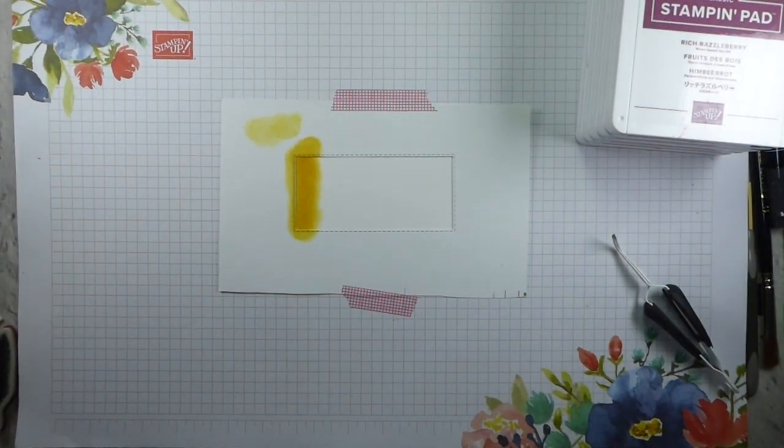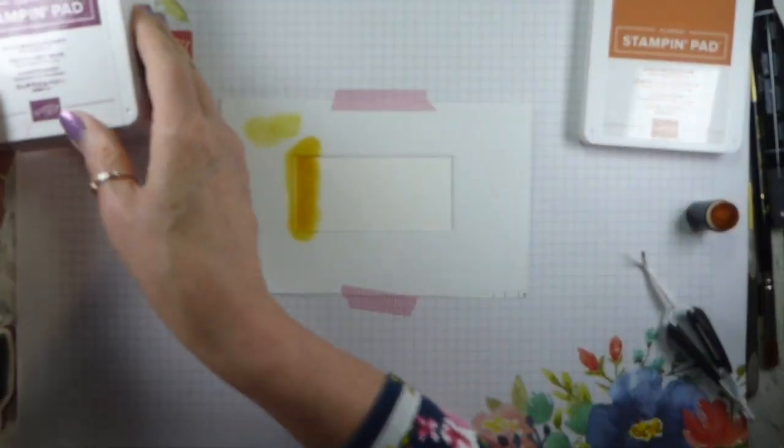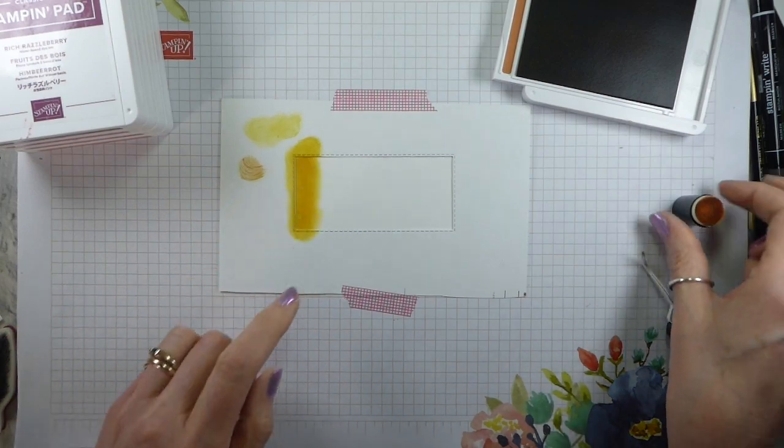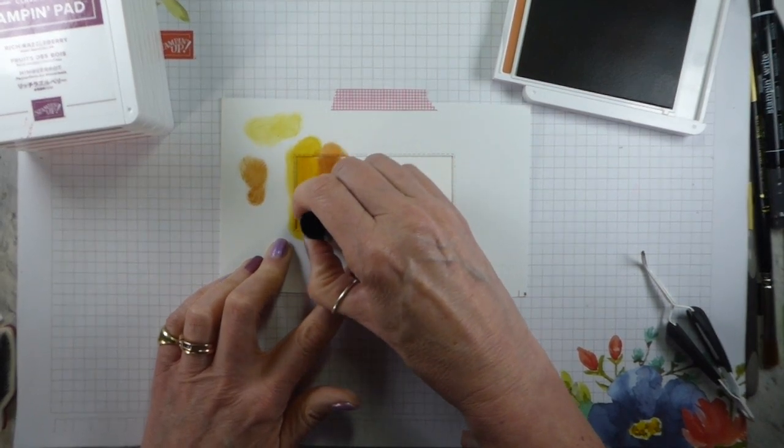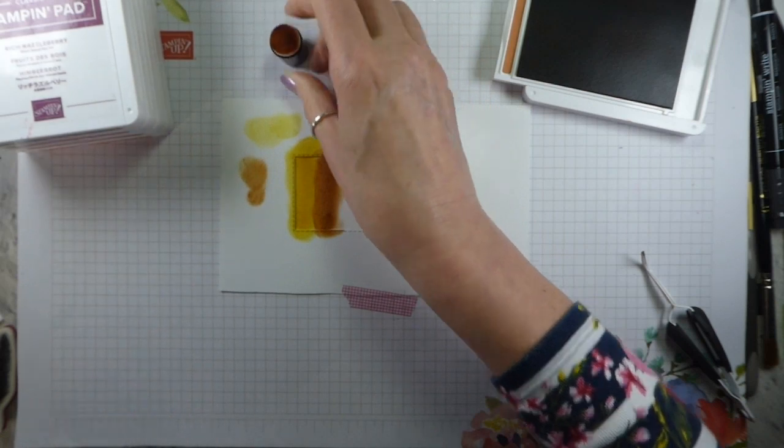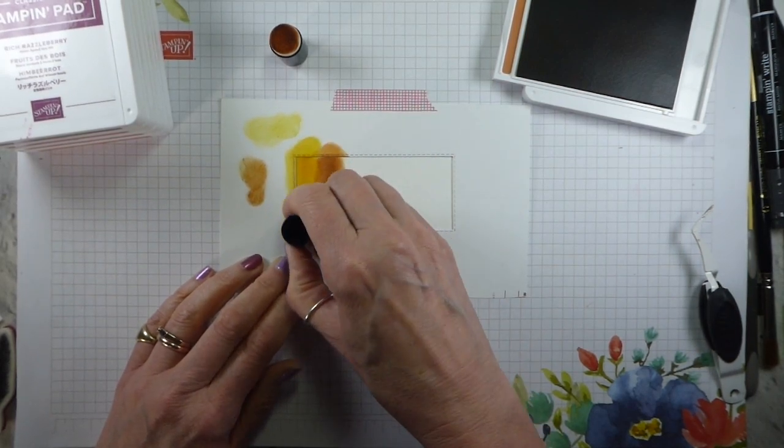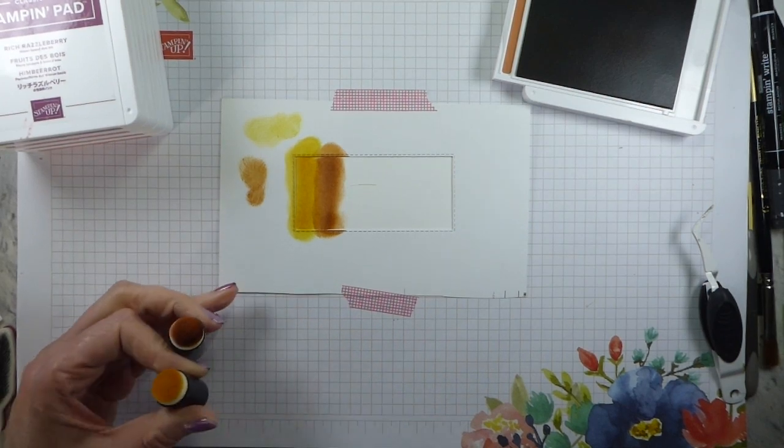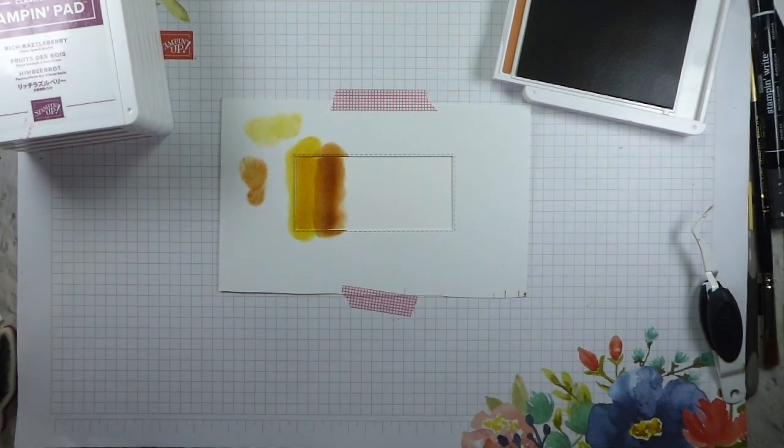Whereas last week I was wanting that kind of woof, this time I want quite a definite line. So I am trying to make sure I get into those corners. That's all I need the Bumblebee for because I've got to get five more colors in. So that's Bumblebee done. Let's put that away and pick up my Cinnamon Cider, which I haven't yet labeled.